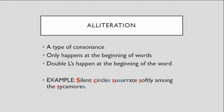In the alliteration example, just like with assonance, it's the sound that matters — not the specific letters. 'Silent circles susurrate softly among the sycamores' — that's a lot of S sounds. All those S sounds happening at the beginning of words is the alliteration. All those S's shown in blue are also consonance, so there are a couple of things going on. For a quiz, identify based on the most prevalent feature: because so many S sounds happen at the beginning of words, we call it alliteration.